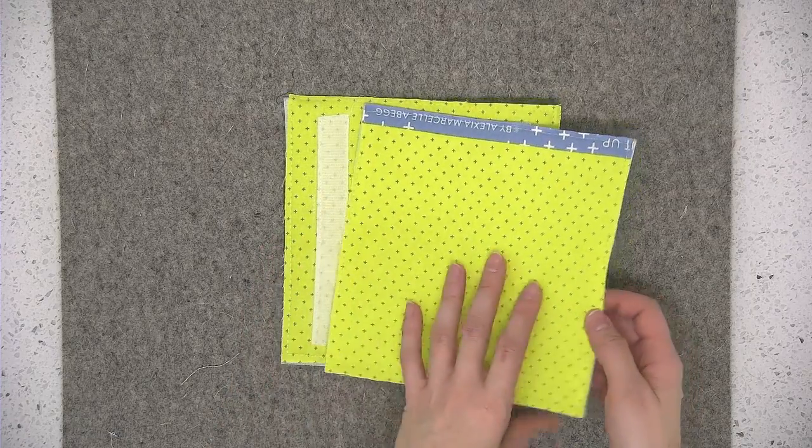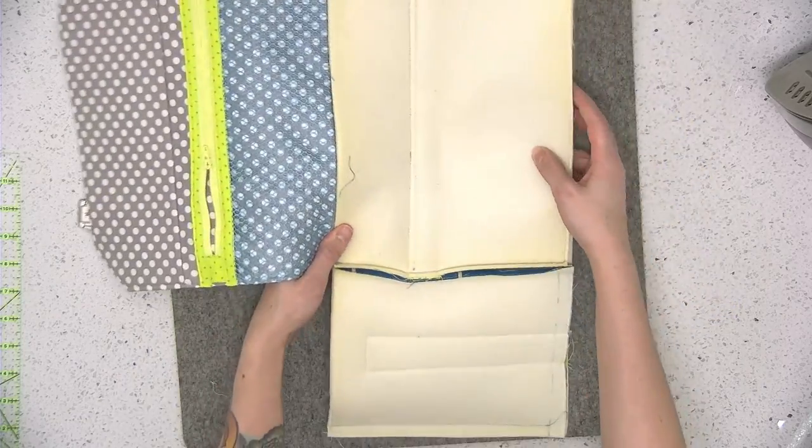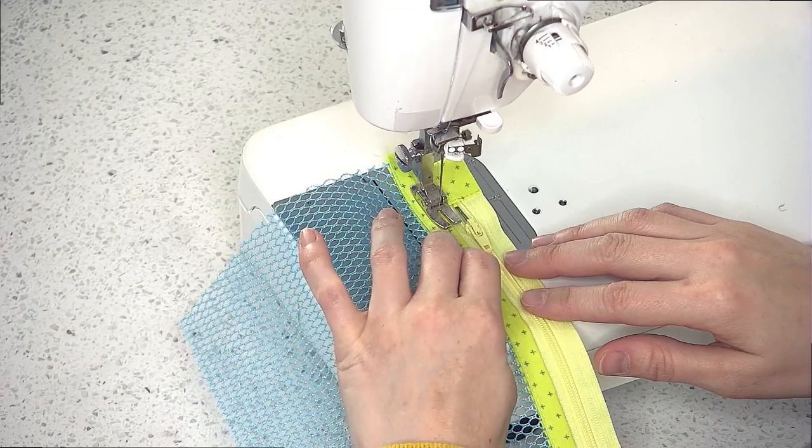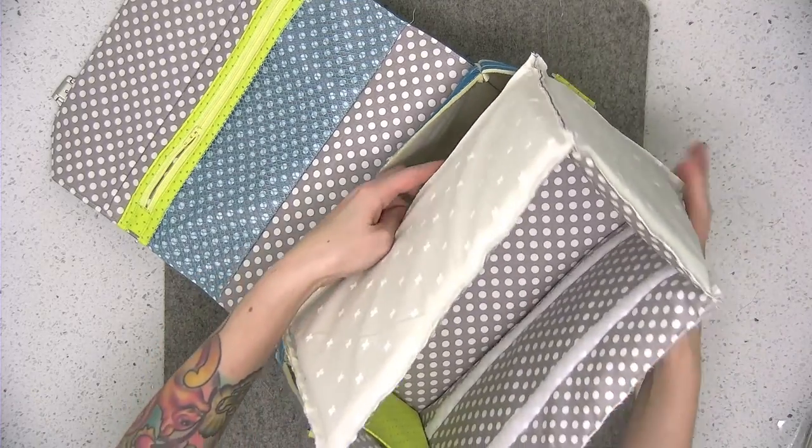You'll learn how to attach velcro for the removable inner dividers. Next you'll get to try your hand at sewing with mesh by making a mesh zippered pocket. I'll share my technique for making the camera bag well padded through the use of craft foam.